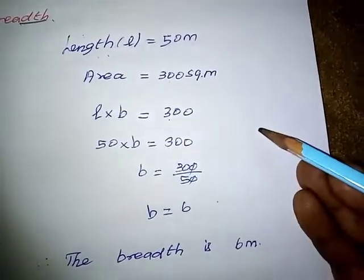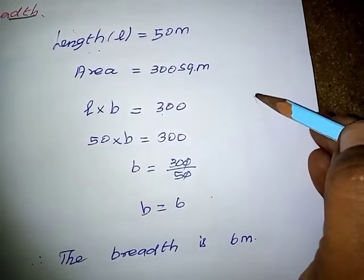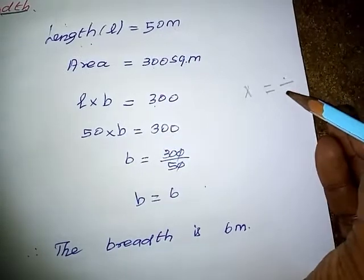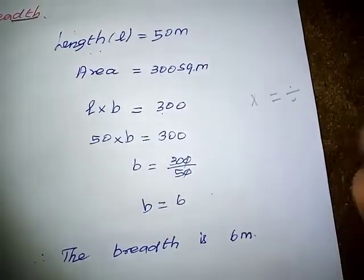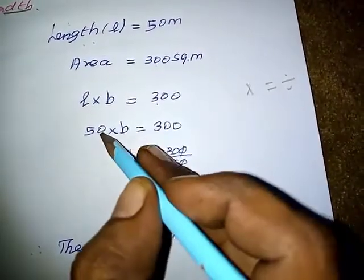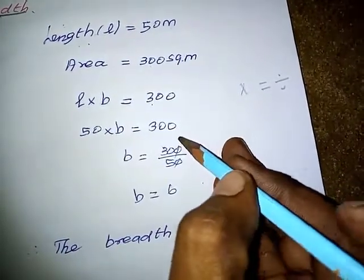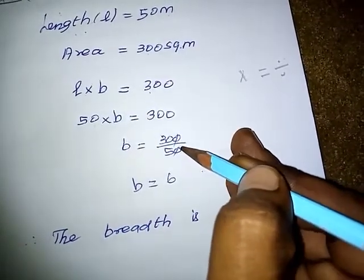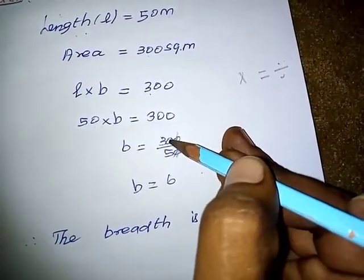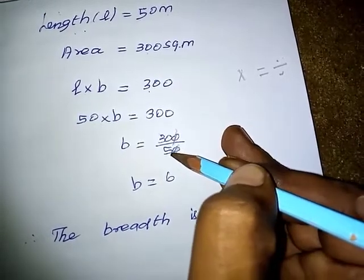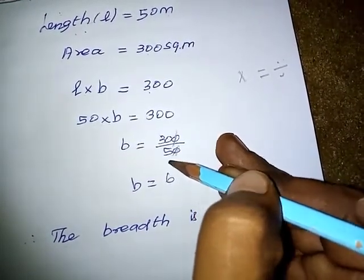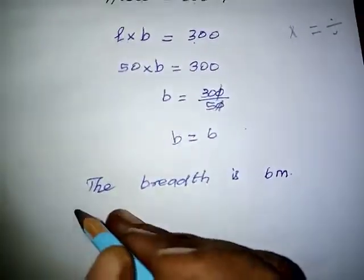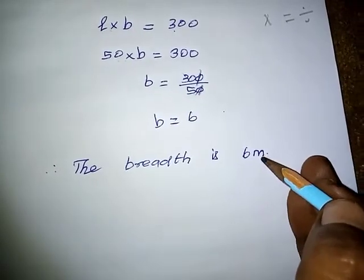Using the mathematical concept that a multiplier moves to the right side as a divisor: B equals 300 divided by 50. Cancel the zeros — 30 divided by 5. Five goes into 30 six times. Therefore, the breadth of the rectangle is 6 meters.